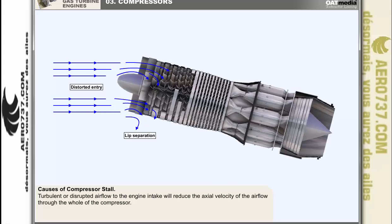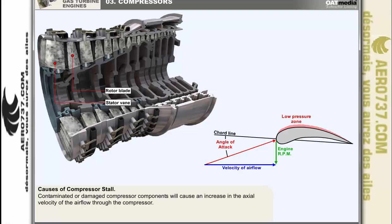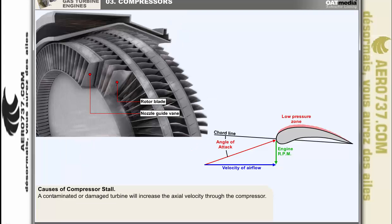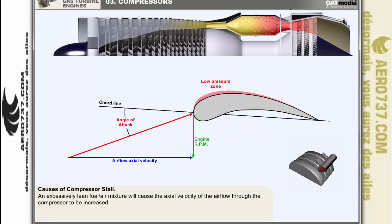Turbulent or disrupted airflow to the engine intake will reduce the axial velocity of the airflow through the whole compressor. Contaminated or damaged compressor components — rotor blades or stator vanes — will reduce the efficiency of the compressor, causing an increase in axial velocity due to decreased compression ratio. A contaminated or damaged turbine will not be capable of generating the power required to drive the compressor at the correct speed, causing the axial velocity through the compressor to increase. Excessively lean fuel-air mixture caused by abrupt throttle retardation will cause the axial velocity to be increased by the decreasing combustion chamber back pressure.